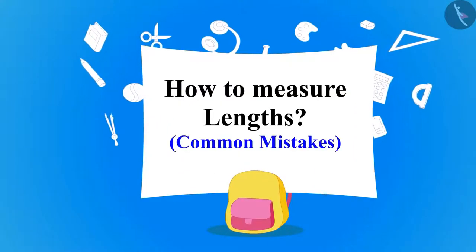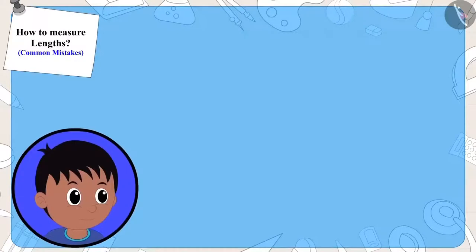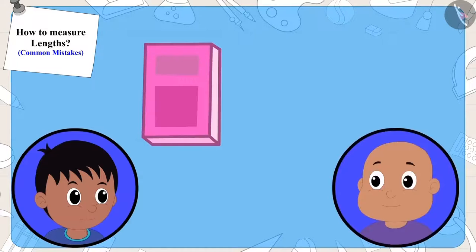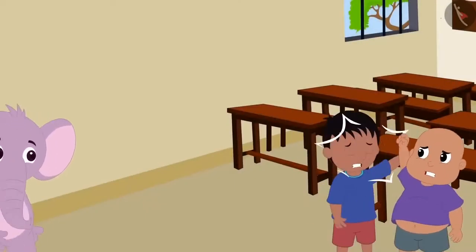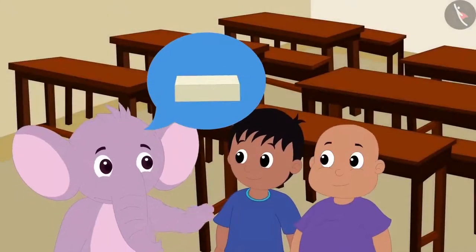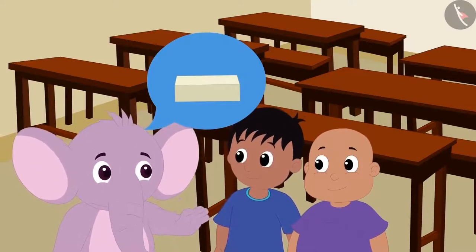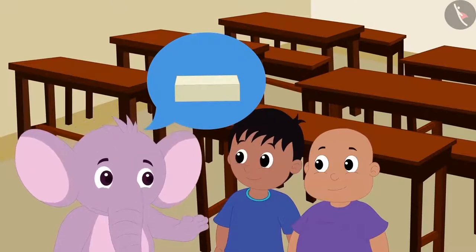Raju and Bablu are fighting in class. Raju is saying that his notebook is longer and Bablu is saying that his notebook is longer than Raju's. Raju saw them fighting and told them that they can use an eraser to measure the length of the notebook. This way, they will know which of the two notebooks is longer.